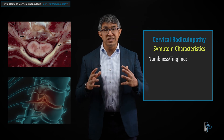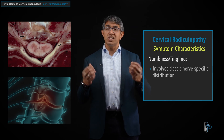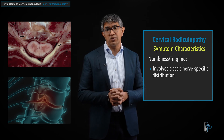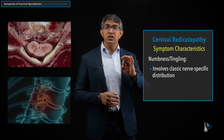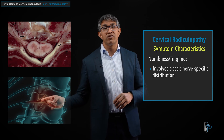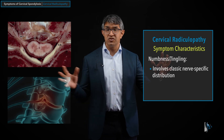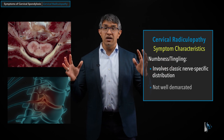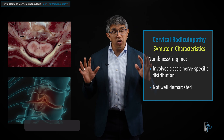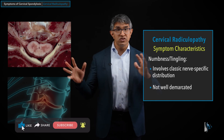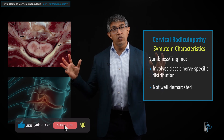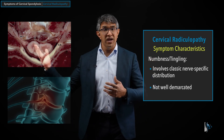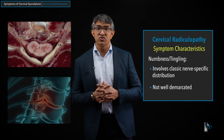Finally, numbness and tingling: sensory changes may mean people don't feel something, or they might have a pins-and-needles type sensation called paresthesias. Those symptoms also go wherever that nerve goes. It's important to note that the numbness distribution is not always well demarcated — two people with a C6 radiculopathy could have slightly different numbness patterns, depending on how the nerves conduct after they leave the cervical spine.